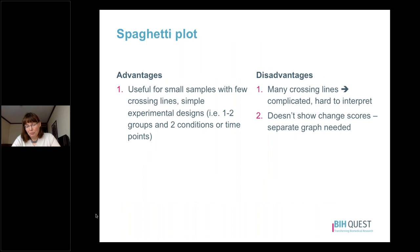The spaghetti plot has advantages and disadvantages. The main advantage is that it's useful for small samples with few crossing lines and simple experimental designs — for example, one or two groups and two conditions or time points. However, spaghetti plots don't work well with larger data sets when you have many crossing lines, which can lead to a very complicated graphic that essentially just looks like a mess — hence the name spaghetti plot — and these graphs can be very hard to interpret. The spaghetti plot alone also doesn't show change scores, so a separate graph is needed for that information.